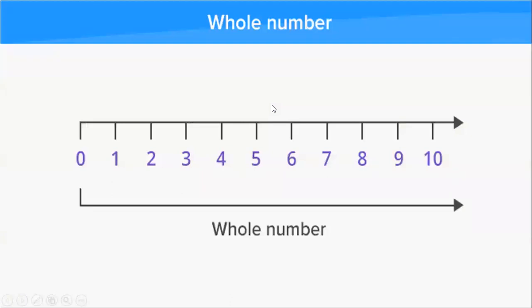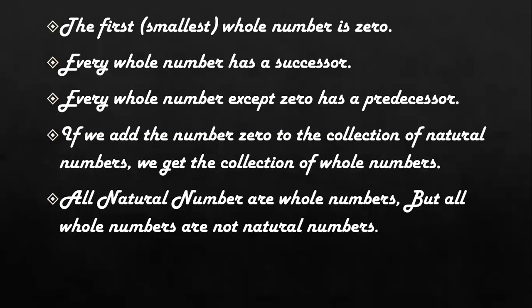The whole number starts with zero. The first whole number is zero. Every whole number has a successor. Every whole number except zero has a predecessor.